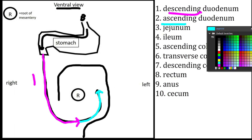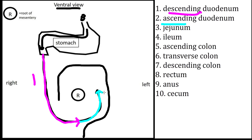The next structure we'll consider is the jejunum. We're not going to draw it in completion because the jejunum fills up the ventral abdomen and would basically fill our whole image. We're going to draw the initial part and the terminal part of the jejunum. Initially it begins to the left of the root of the mesentery and spreads throughout the ventral abdomen, then we'll pick it up again — the terminal part — on the right of the root of the mesentery.